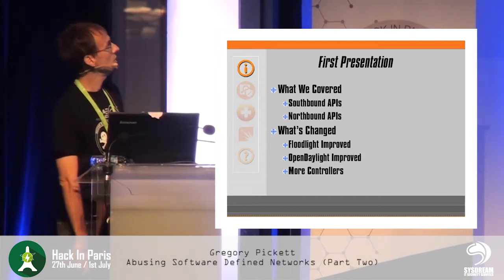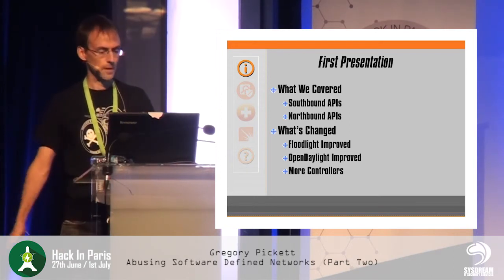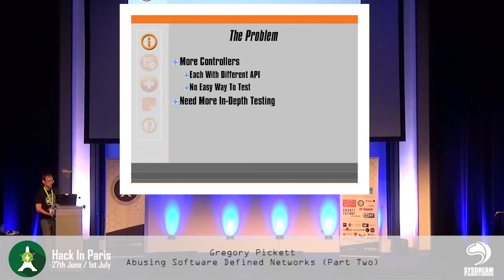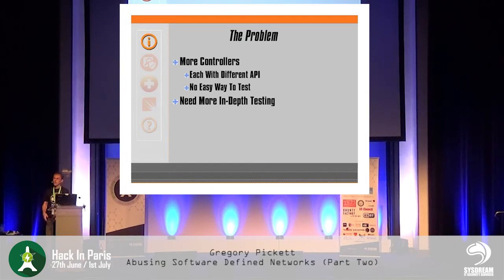What has also changed is that not only do we have Floodlight and OpenDaylight in the market, we also have a whole lot more controllers now. The toolkit is able to work with seven, but there are so many more — each with a different API, and they're all special snowflakes, so there's really no easy way to test them. Not only do we have a lot more controllers, we need to go much more in depth. We want to get the fundamentals down — encryption and authentication — but we also have to look at the internals: how it's handling data, is it handling it in a safe way, can it be manipulated? We need to go deeper with all those controllers to make sure it's secure both inside and out.